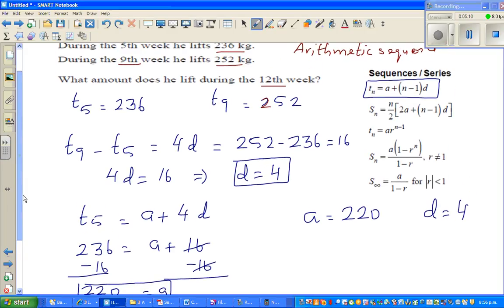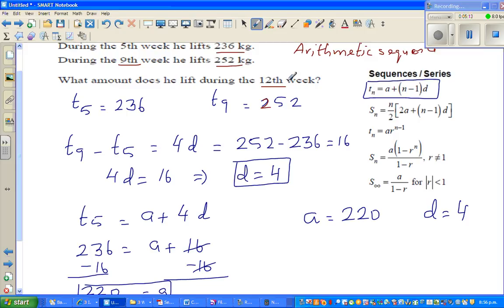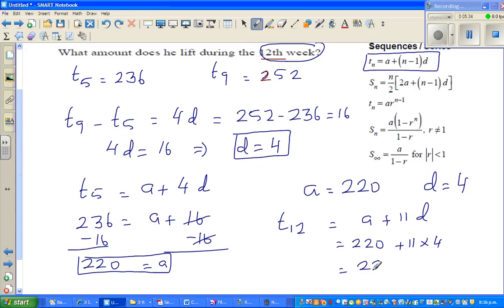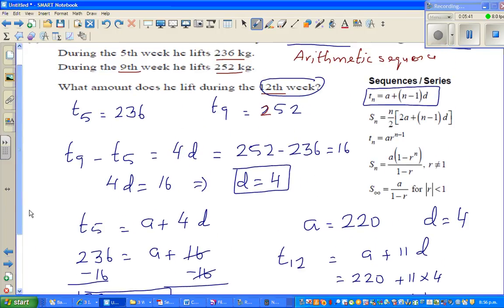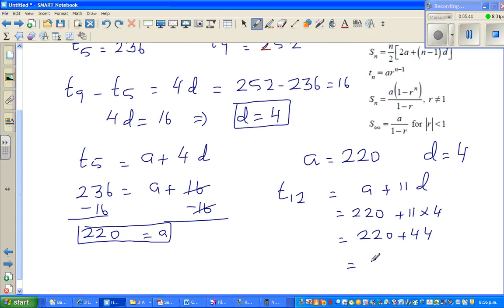Now the question is, what amount does he lift in the 12th week? Using the formula, t12 would be a plus 12 minus 1, which is 11D, which is 220 plus 11 times 4. Using BEDMAS, this is 220 plus 44. So in the 12th week, Peter is lifting 264 kgs.